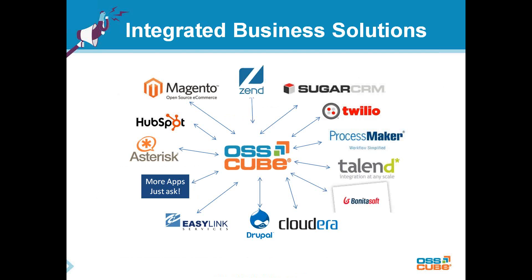One thing that separates OSSQ from other organizations is that we have a broad set of competencies. But our greatest strength — what separates us from other open source solution providers — is the ability to integrate many applications and open source products into solutions that help organizations meet business objectives and differentiate customers from their competition. We basically have a goal to become a trusted advisor for our clients, helping them drive innovation and constantly improve customer experience while streamlining business processes. We are partners for SugarCRM, Talend — in fact, the only Talend partner in entire India and Asia Pacific — and Magento.